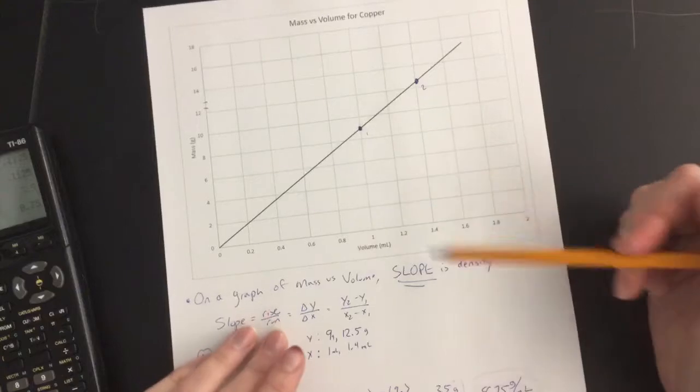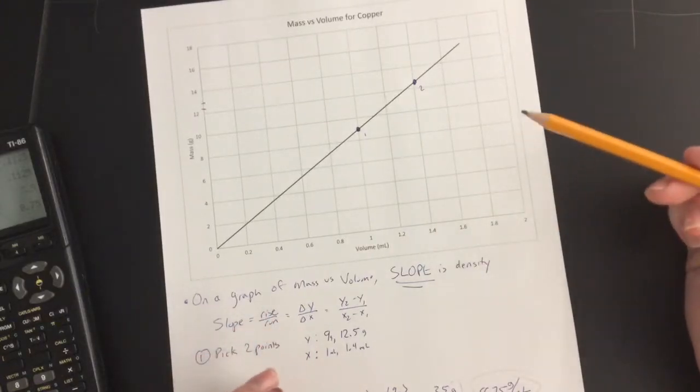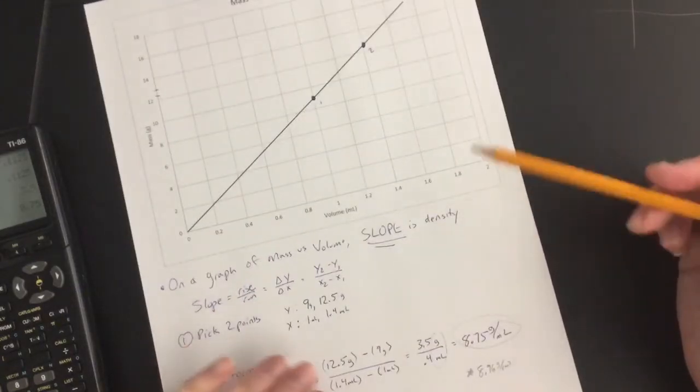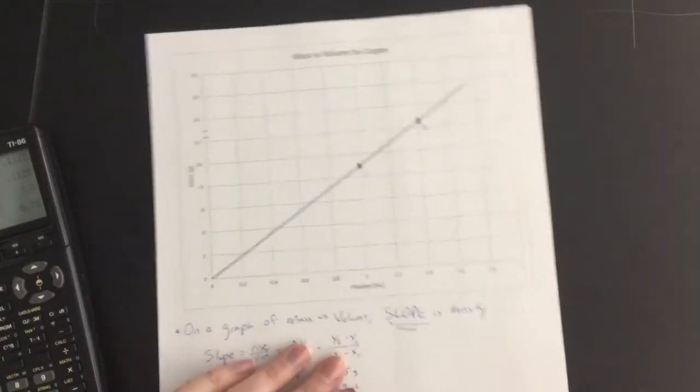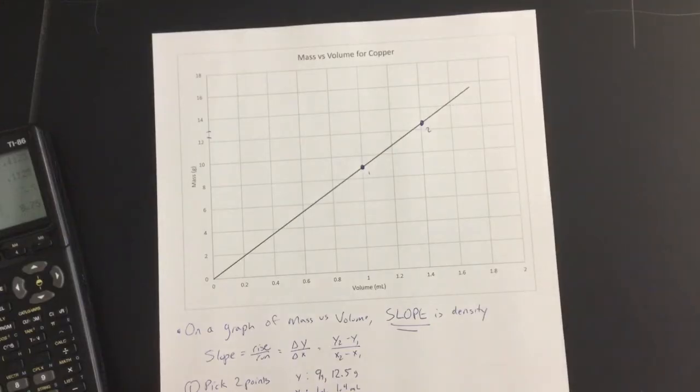The point is, often, you might have to choose whichever one's closest anyway, and the answer choices are generally not that close. But as long as you're doing the math correctly, that's all that really matters on calculating density from a graph. Thanks for watching.